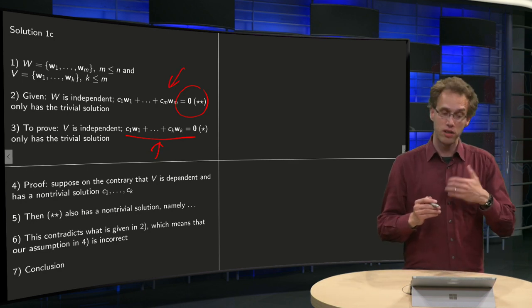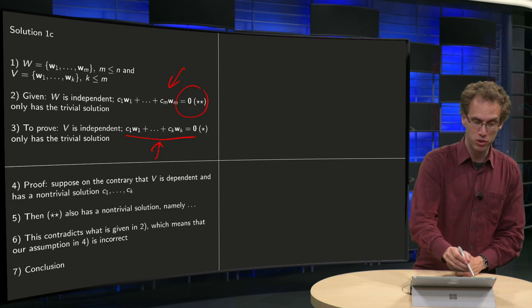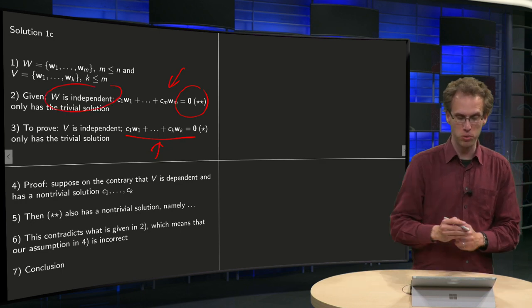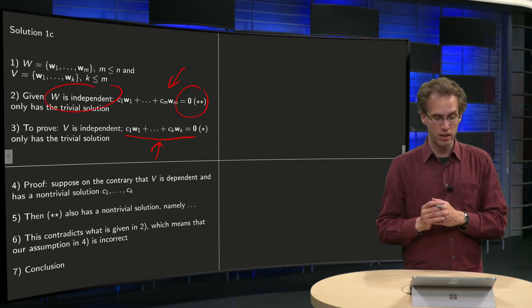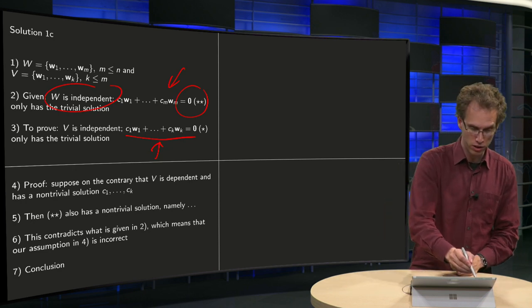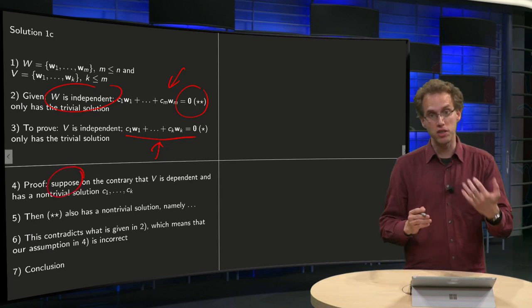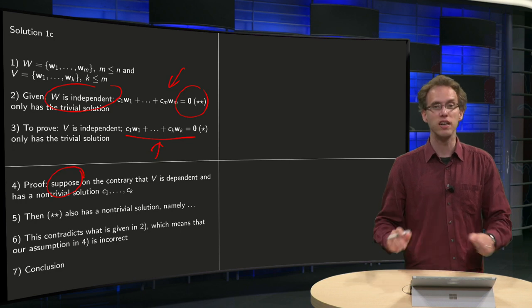V is independent, which is contradicting what is given in step 2. So, that's not correct, so our assumption here, suppose, is incorrect, which means that we can conclude that V is independent.